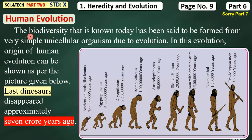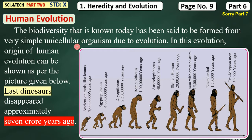The biodiversity that is known today — the many differences you see — have been said to be formed from a very simple unicellular organism. All of the biodiversity that you see, other species that you see in the world, they are made from a simple organism. Due to evolution, there are changes, and all of the things that you see in plants, animals, and even in a small cell.